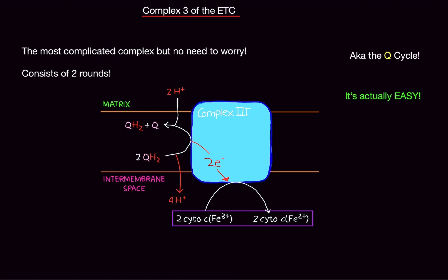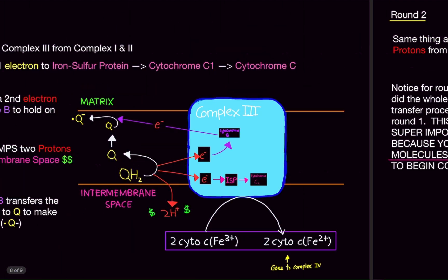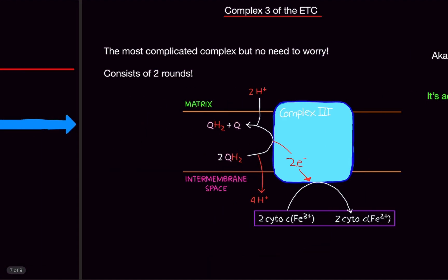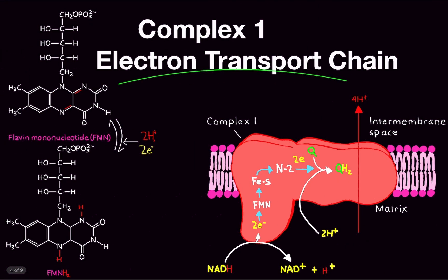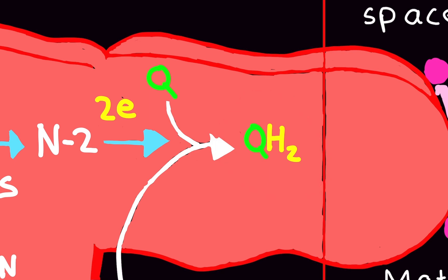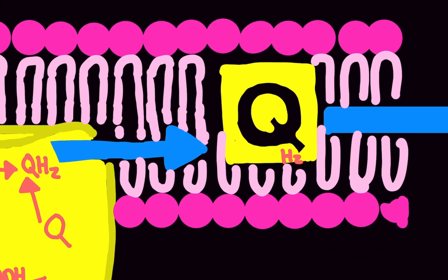So, here's what's happening. We're going to go over it step by step, so don't worry. But here's what you need to know for this overview part. So, Complex 1, so let's all go back to Complex 1. Complex 1, we made ubiquinol. Complex 2, we made ubiquinol.